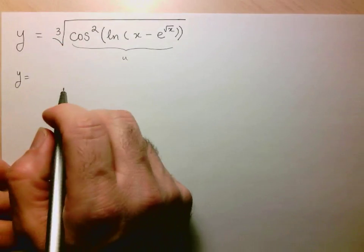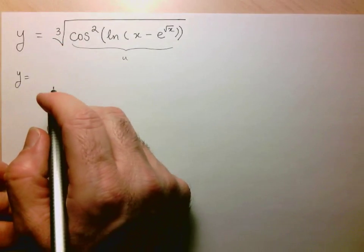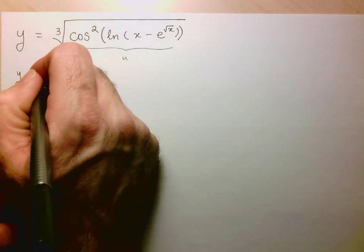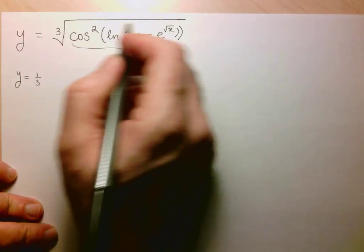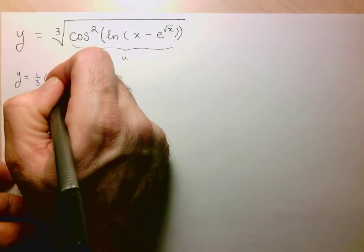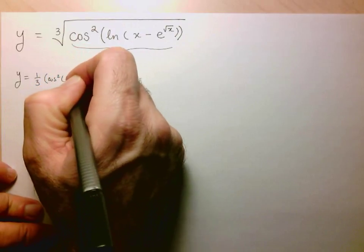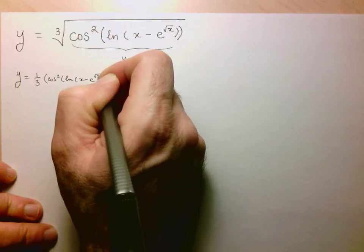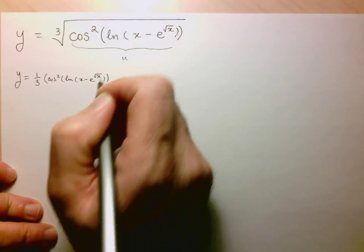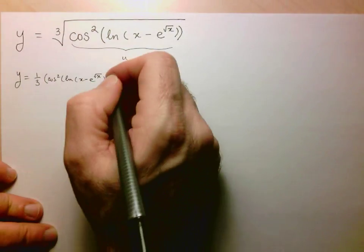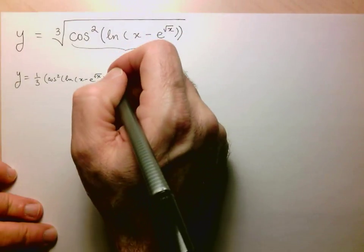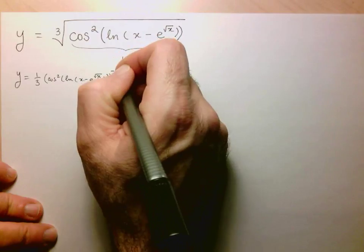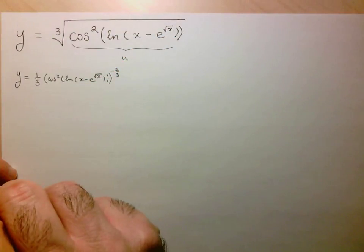I've got u to the 1/3, that's the only thing I'm focusing on now. The derivative of u to the 1/3 is just 1/3 times u, which is this whole thing here, cosine squared of ln(x - e^√x), to the well, 1/3 minus 1 is negative 2/3. So there's my first application of the chain rule.